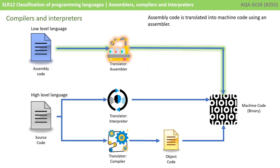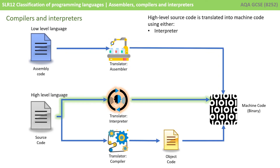Let's start with a quick recap from our previous video. Assembly code is translated directly into machine code using an assembler. High-level language source code can either be translated into machine code using an interpreter or a compiler.